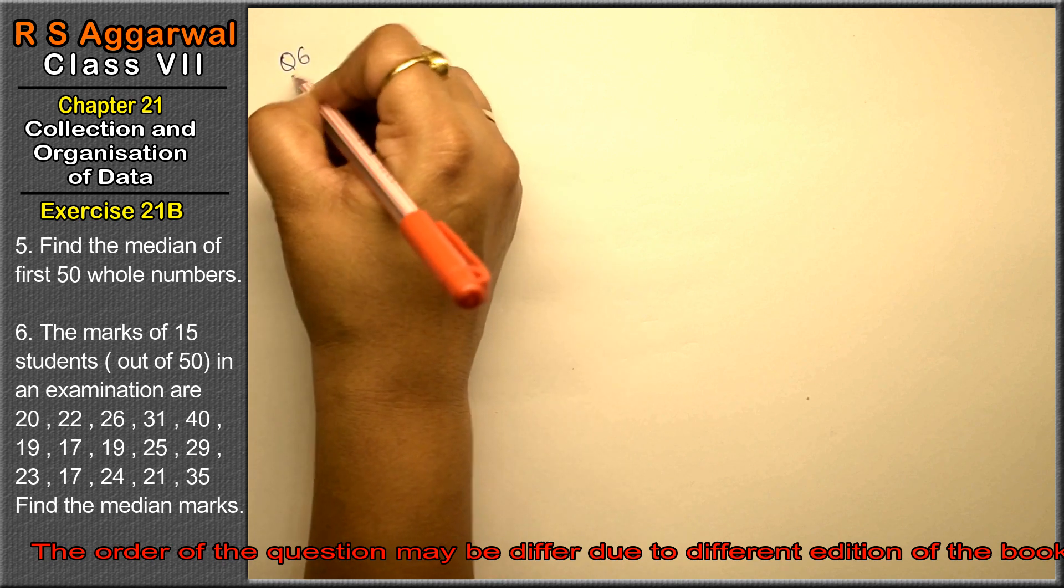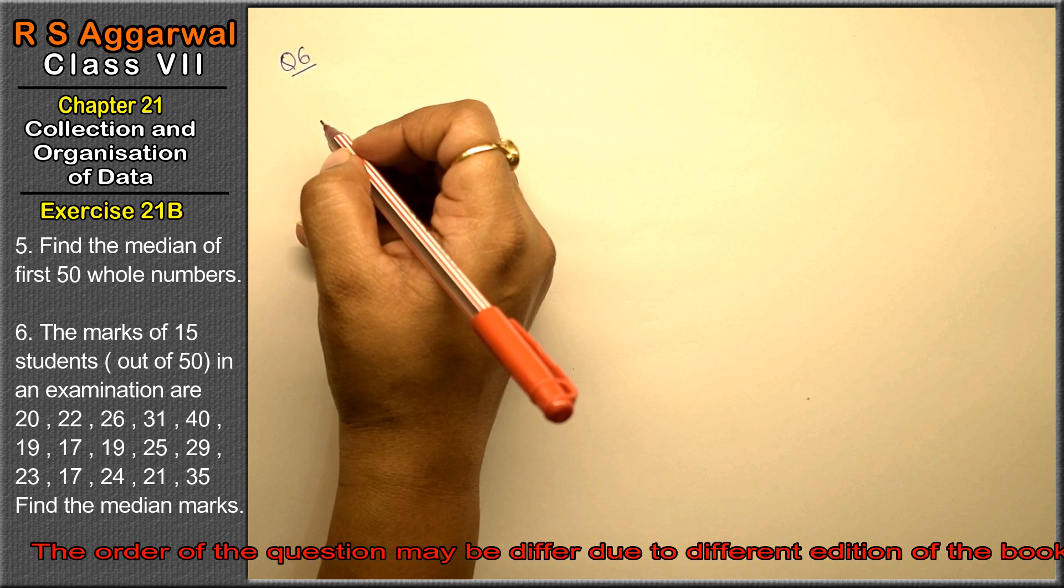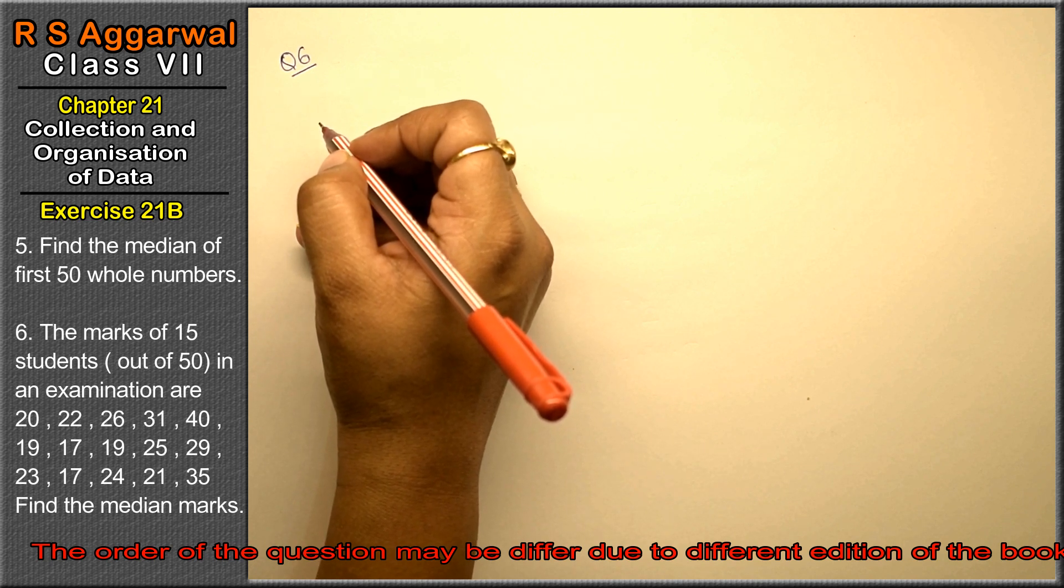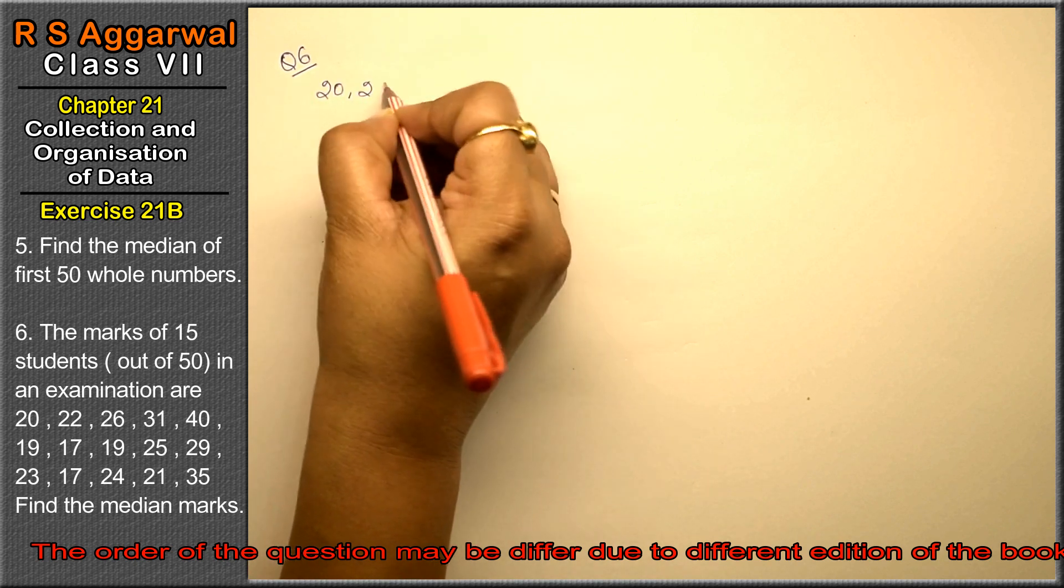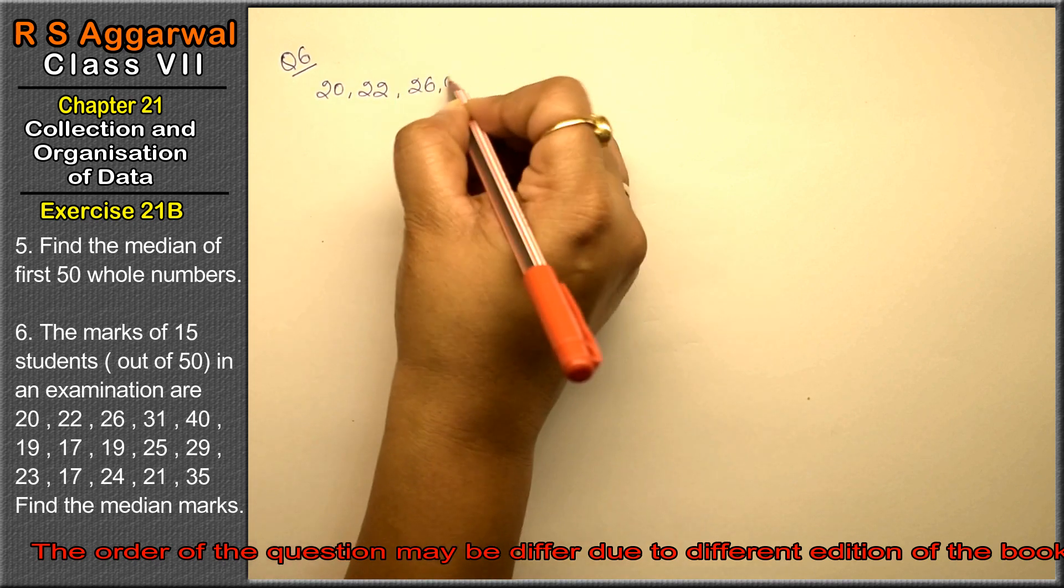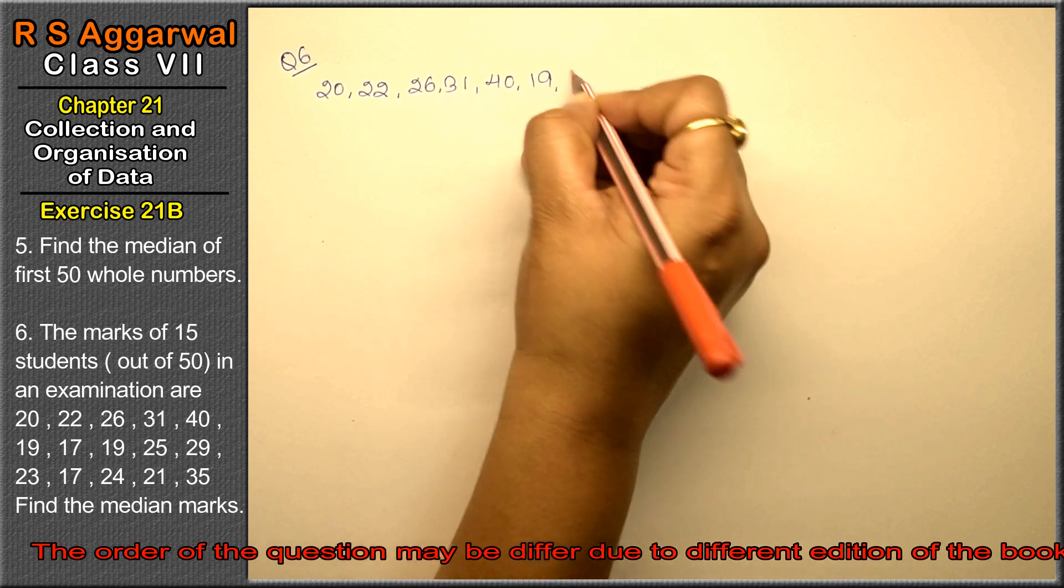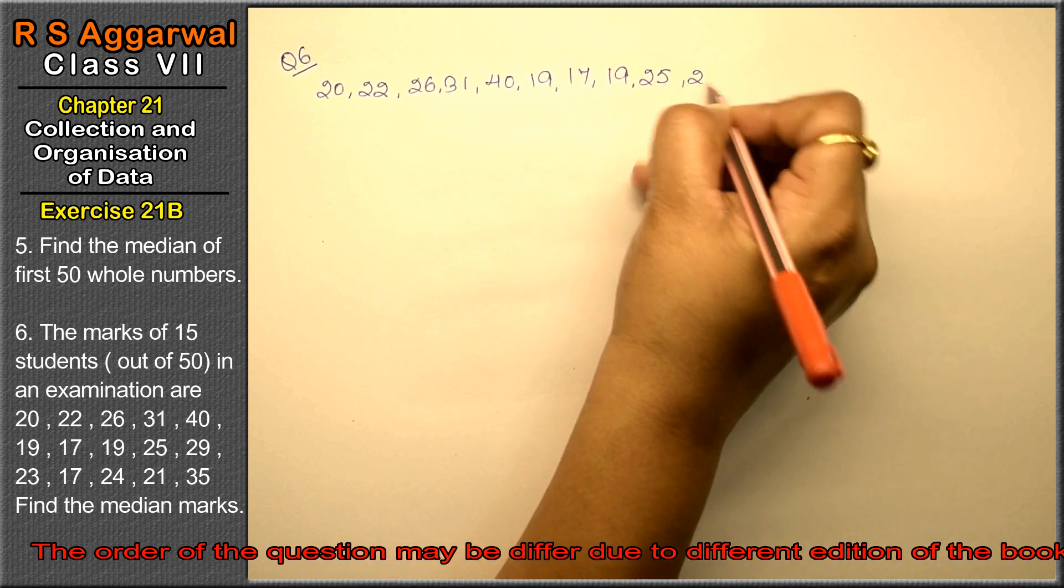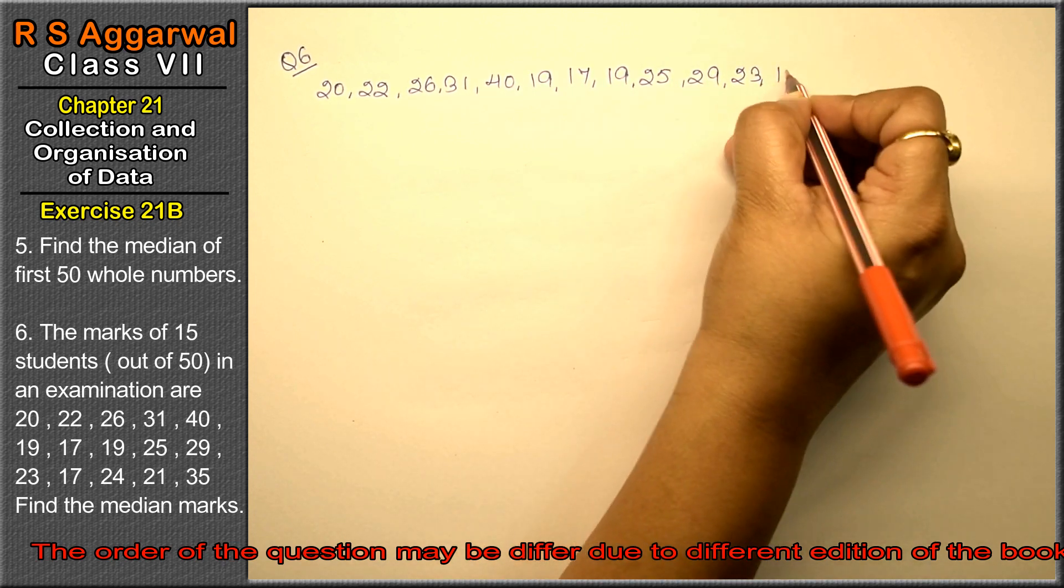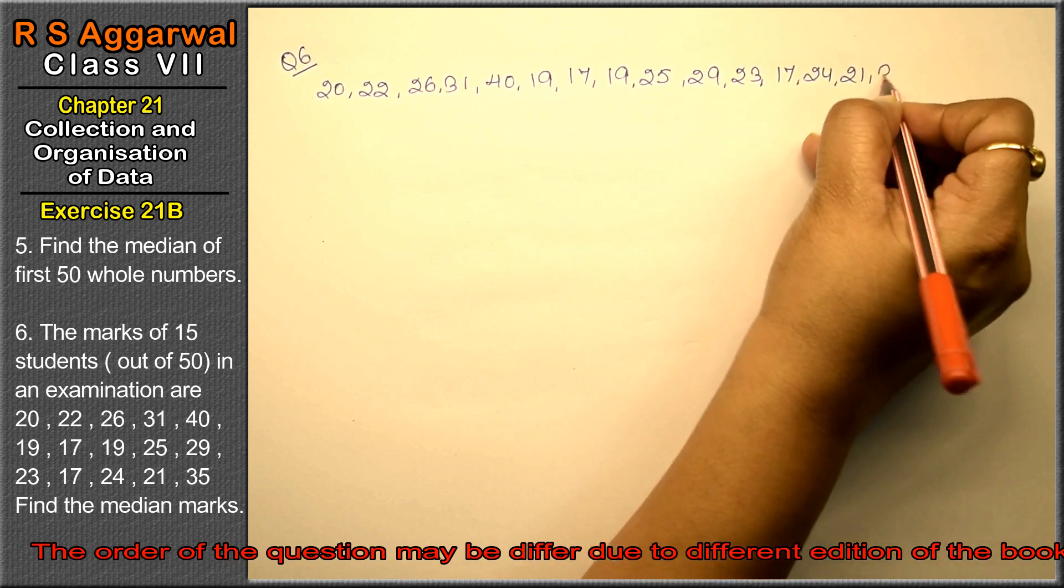Let's do question number 6 of exercise 21B, that is collection and organization of data. Question number 6 is, the marks of 15 students out of 50 in an examination are: 20, 22, 26, 31, 40, 19, 17, 19, 25, 29, 23, 17, 24, 21, and 35.